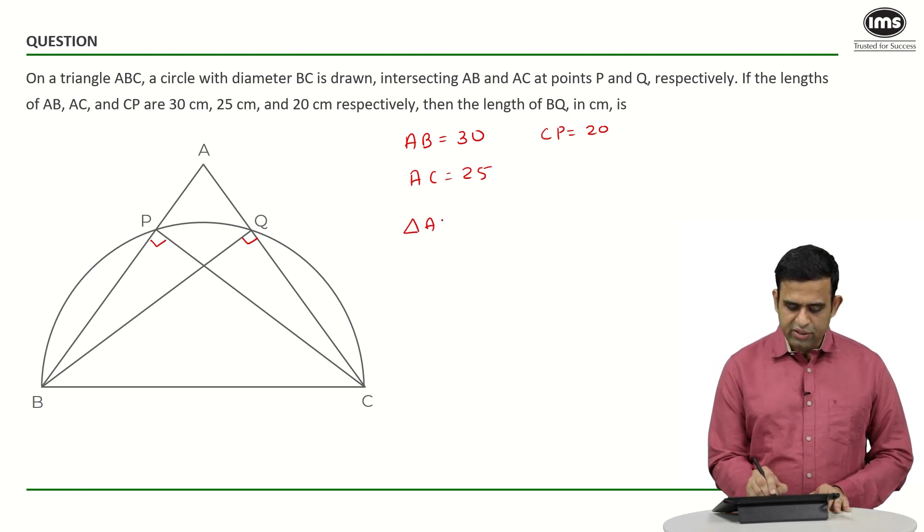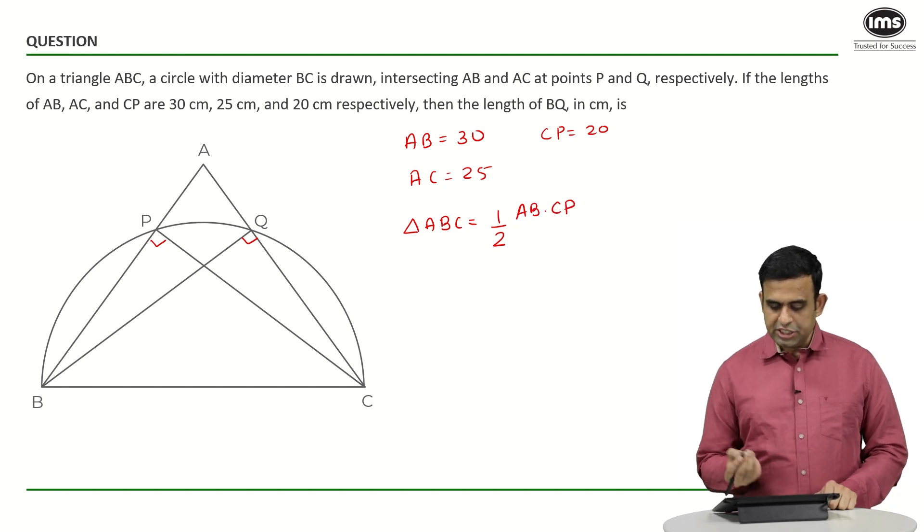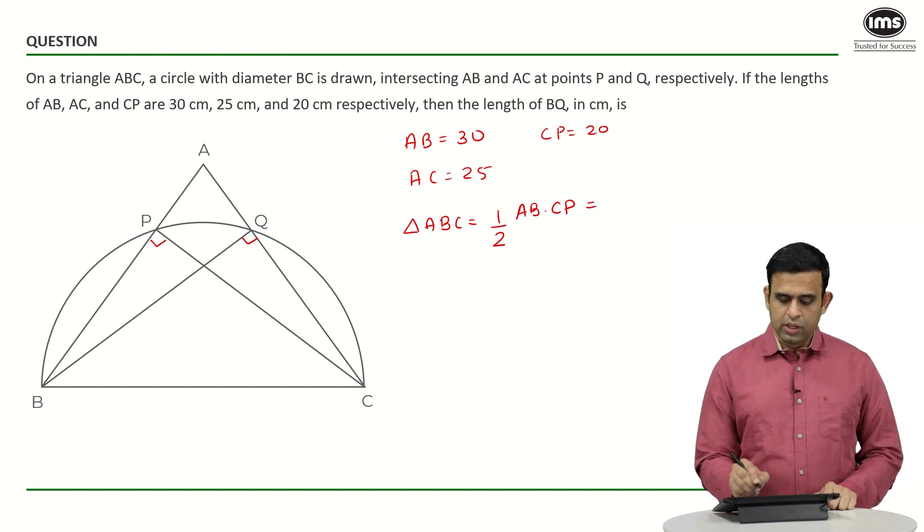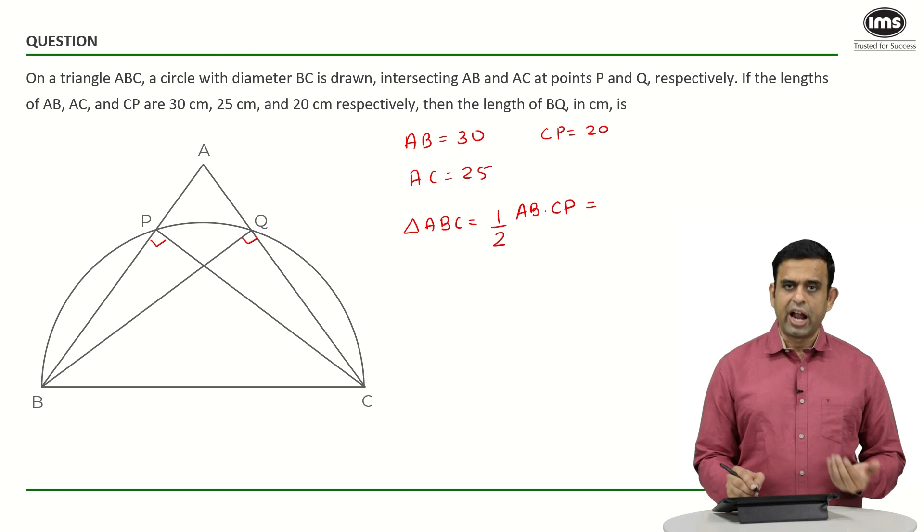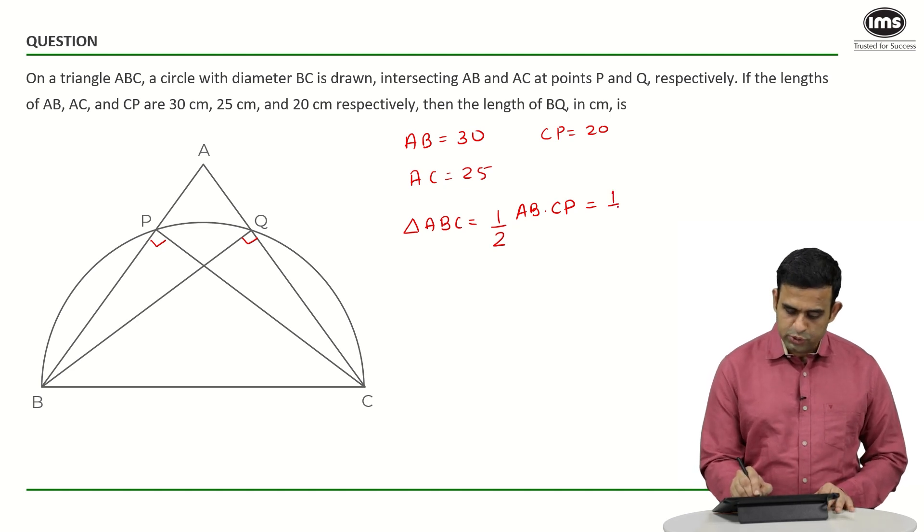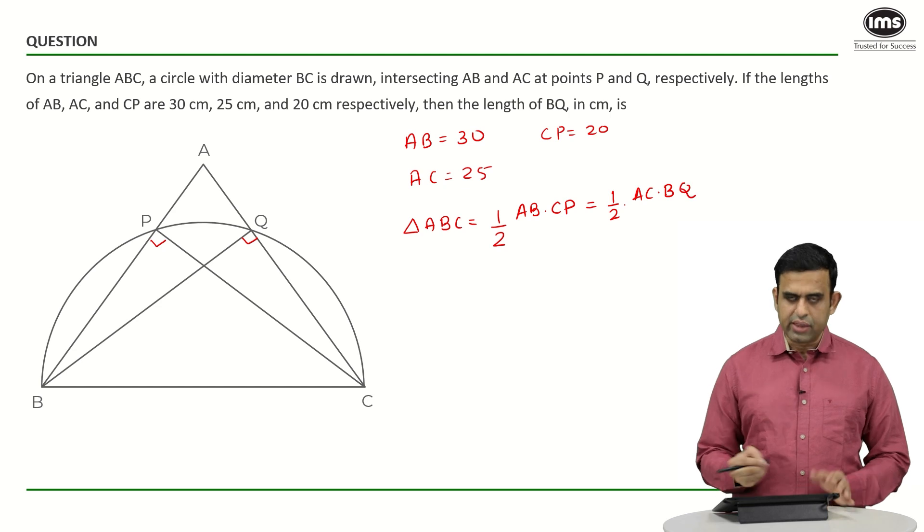If I look at the triangle ABC, I can say the area of the triangle ABC if I take AB as a base will be half of AB times CP, which in turn should be equal to if I take the base as AC, the height happens to be BQ, so half of AC into BQ.